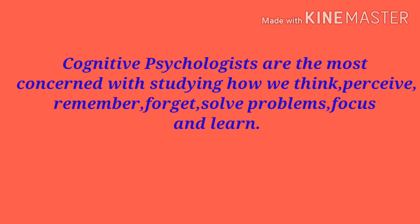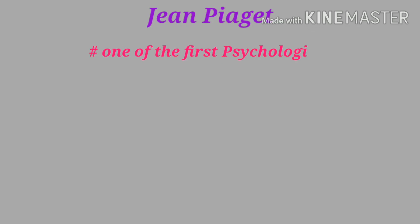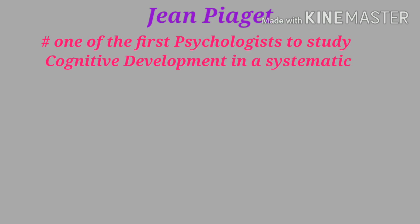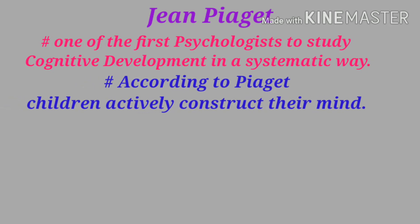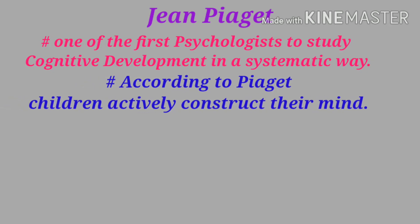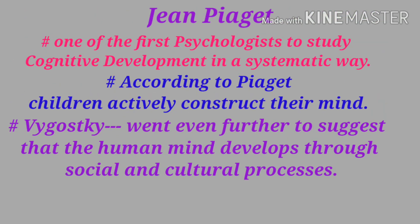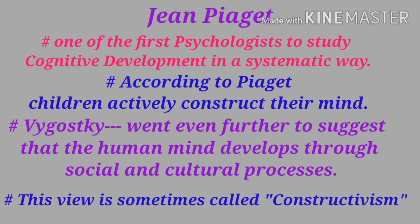One particularly famous cognitive psychologist is Jean Piaget, who was one of the first psychologists to study cognitive development in a systematic way. While most of his research focused on children, many of his ideas applied to adults as well. According to Piaget, children actively construct their own minds. Another psychologist, the Russian Vygotsky, went even further to suggest that the human mind develops through social and cultural processes. Modern cognitive psychology therefore views human beings as actively constructing their minds through exploration of the physical and social world, which is why this view is sometimes called constructivism.